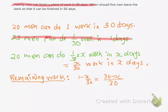Once again the question says when should 5 men leave the work. So when 5 men leave the work, 20 minus 5 becomes 15. So there are only 15 men left to do the remaining work.